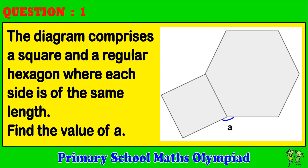Question 1: The diagram comprises a square and a regular hexagon, where each side is of the same length. Find the value of A.